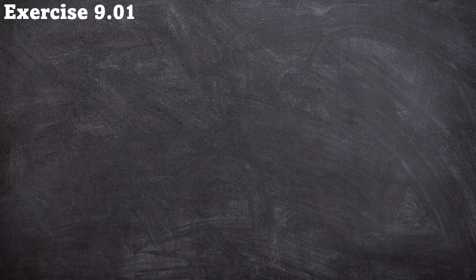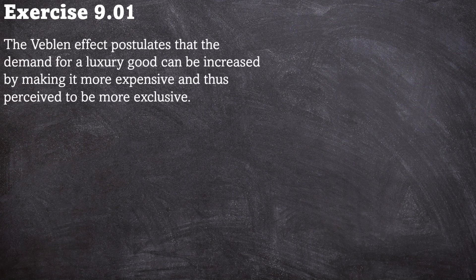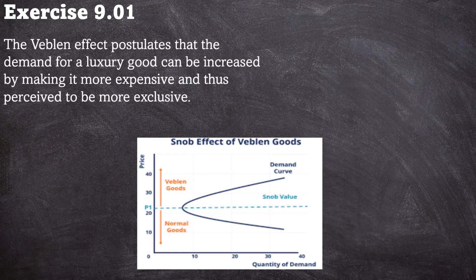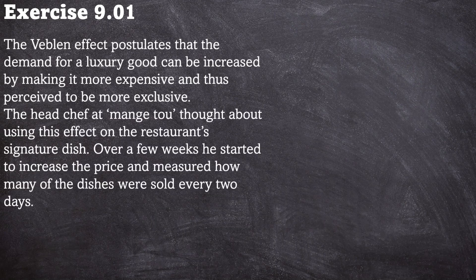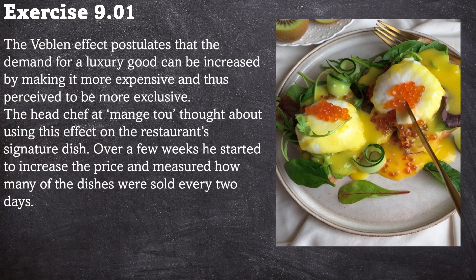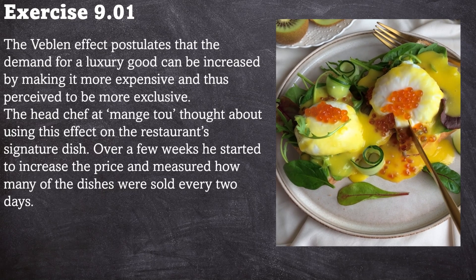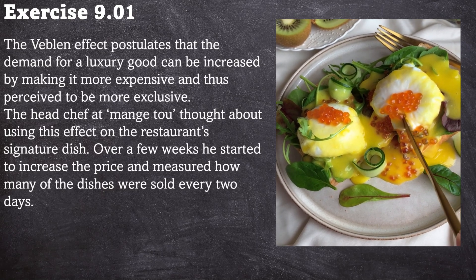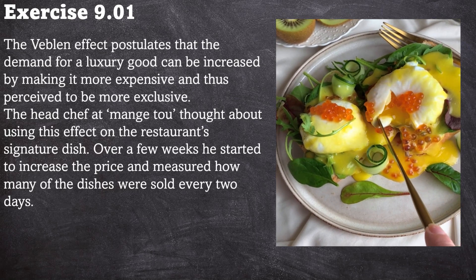This is exercise 9.01. The Weblin effect postulates that the demand for a luxury good can be increased by making it more expensive and thus perceived to be more exclusive. The head chef at Monge 2 thought about using the effect on the restaurant's signature dish. Over a few weeks he started to increase the price and measured how many of the dishes were sold every two days.